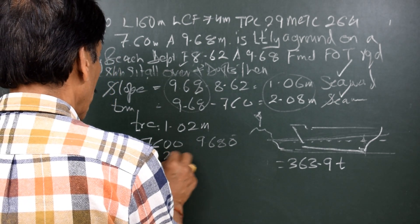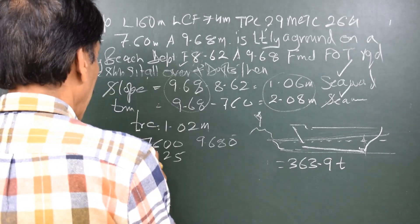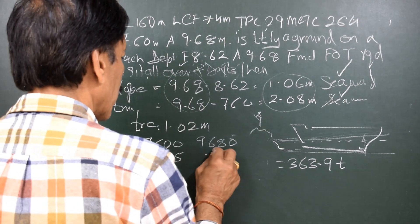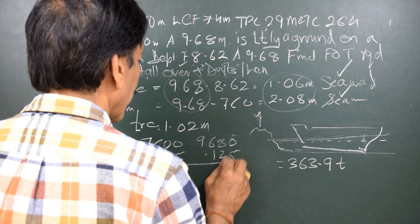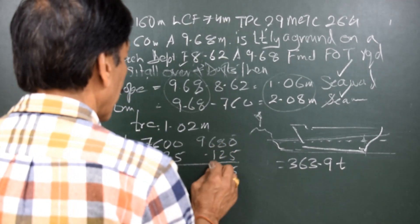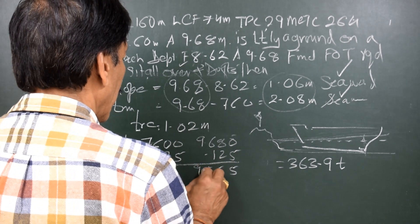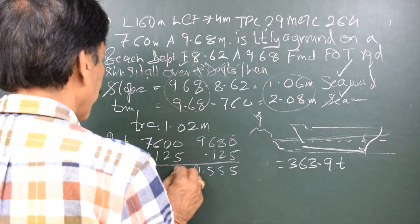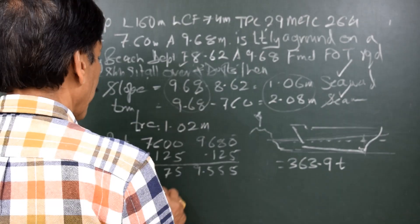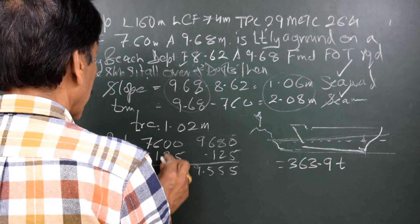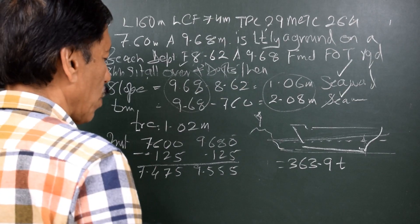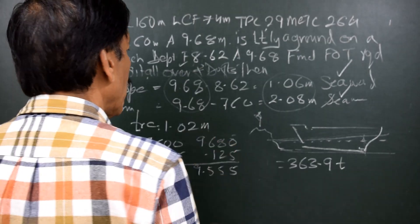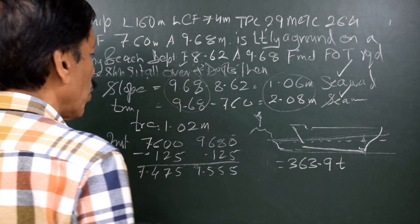That is minus 0.125 forward and minus 0.125 aft, giving 7.475 forward and 9.555 aft. Now, there is a trim change of 1.02 meters.